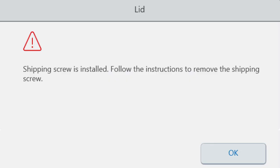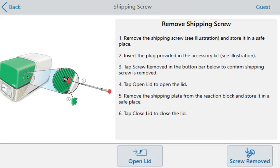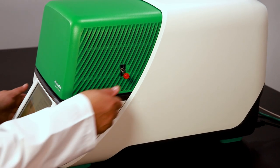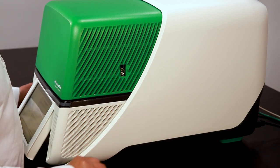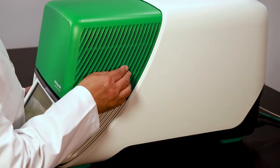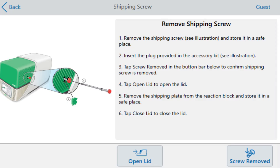The screen will display a warning about the installed shipping screw. Press OK to view instructions for removing the shipping screw. Remove the shipping screw by turning counterclockwise until the screw can be pulled out. Use the shipping plug to cover the hole where the shipping screw was. Press Screw Removed on the touch screen to confirm that you have removed the shipping screw.